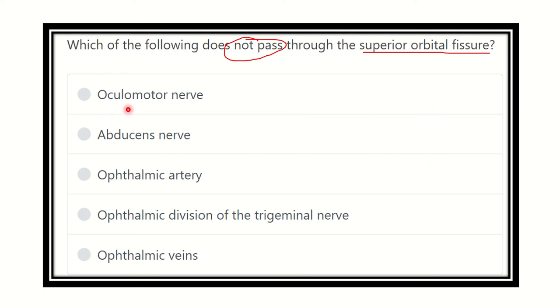The options are: oculomotor nerve, abducent nerve, ophthalmic artery, ophthalmic division of the trigeminal nerve, and ophthalmic vein.